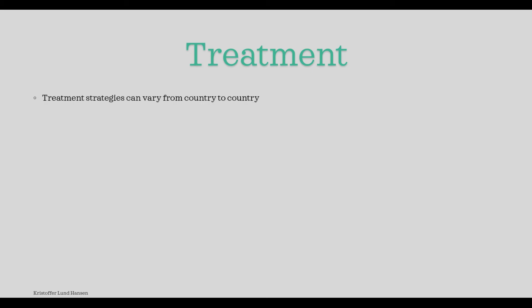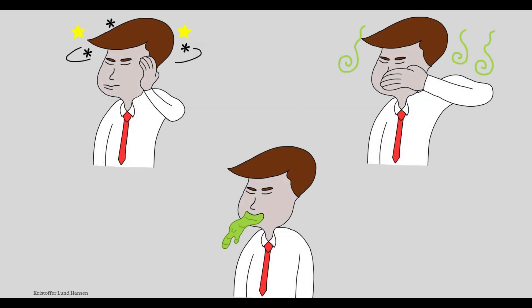Before discussing treatment, it's important to note that treatment can vary substantially between countries. The main strategy is usually to target and lower the intensity of symptoms, and this is only done in the acute phase of the disease. Long-term treatment is generally not recommended and not needed. We mainly want to target three symptomatologies: the vertigo, the nausea, and the vomiting.